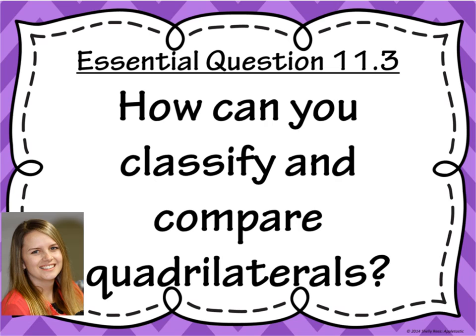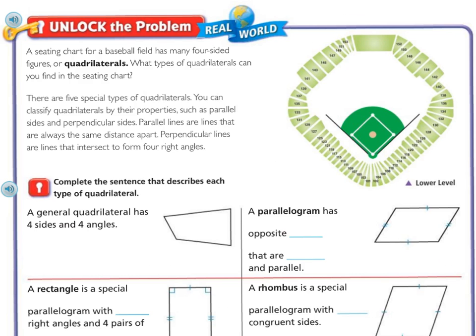In this lesson, we need to know that quad means four, so we're going to be talking about four-sided polygons today. A seating chart for a baseball field has many four-sided figures, or quadrilaterals. What types of quadrilaterals can you find in the seating chart? So if we underline what we're being asked to find, it's what types of quadrilaterals can we find.